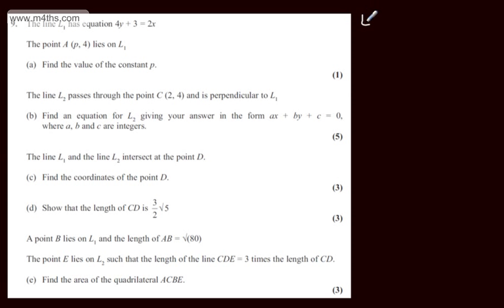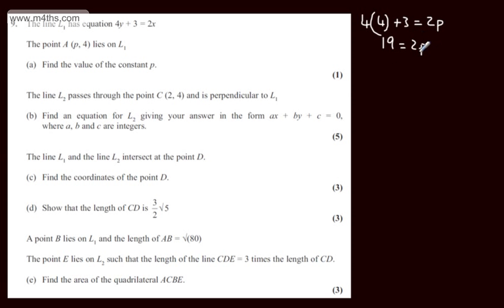We'll have four lots of the y-coordinate, which is 4, plus 3, equal to 2p. This gives 16 plus 3, so 19 is equal to 2p, and therefore p is equal to 19 over 2. That's one mark for part A.